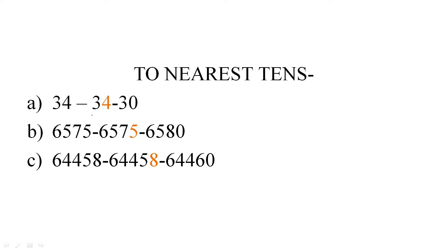Now I am going to tell you rounding off numbers to the nearest 10s. If you are doing rounding off to nearest 10s, you will check the place of 1s. The first example is 34. If you are doing rounding off to the nearest 10s in 34, then you will check the place of 1s and the 1s place is 4. So convert 4 into 0 and the rest of the digit, 3, will be the same, giving the answer 30. If you want to round off 6575 to the nearest 10s, then you will check the place of 1s, which is 5. Apply rule 2: since the 1s place is 5 or greater than 5, you will add 1 to the left digit, making it 8, and 5 will be converted into 0. The rest of the digits 65 will be the same and you will get 6580.